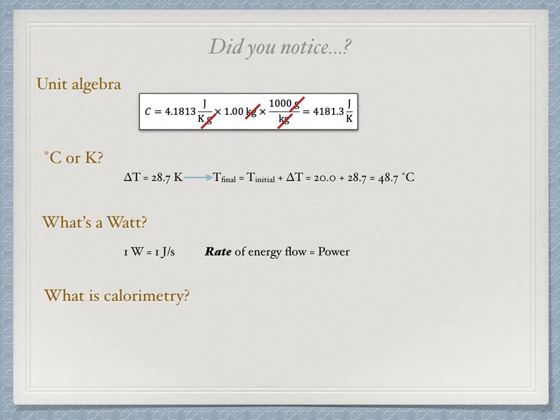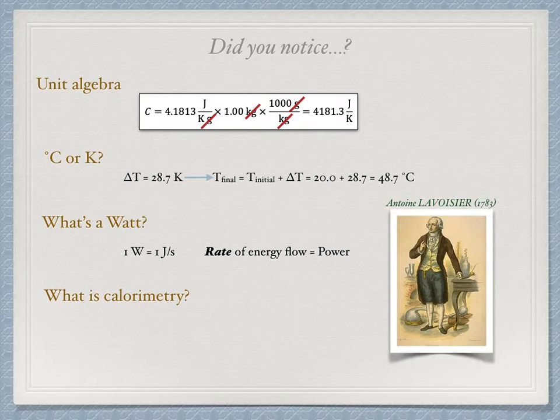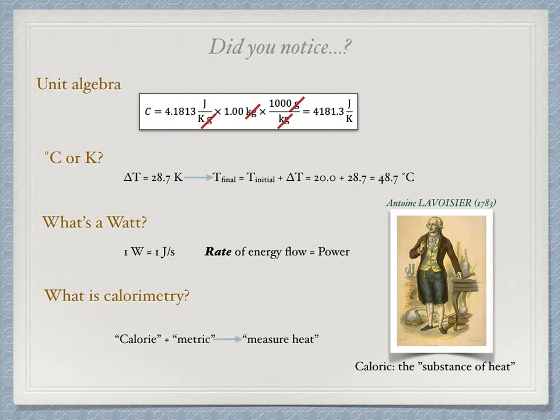It might be interesting to see where the term calorimetry comes from. In the early days of thermodynamics, the first theories described heat as a fluid that would flow from a hot body to a cold body. This was not a fluid like we perceive a liquid to be. They called this elusive fluid caloric, and it was measured by calories. So calorimetry is a combination of the words calorie and metric, and is therefore the science of measuring heat.